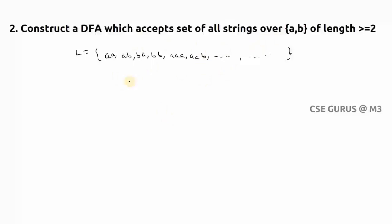Now how to construct the DFA for this? We have seen length equals two, so here we need to follow one logic. First, construct where length equals two: q0, then on a or b go to q1 — this is length one. If I make q1 the final state it accepts length one. For length equals two I need to add one more state, so I add q2 and make it the final state.